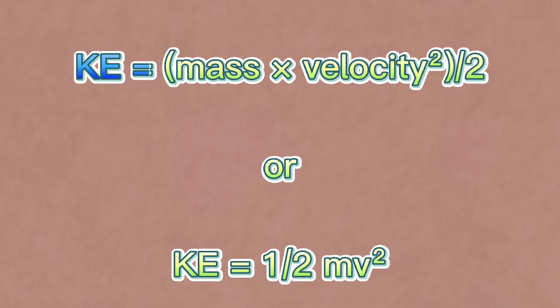The formula on how to calculate kinetic energy is, kinetic energy equals mass times velocity squared divided by 2, or kinetic energy equals 1 half times mass times velocity squared.